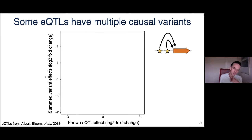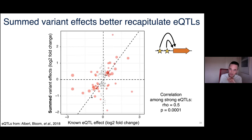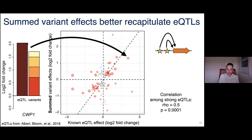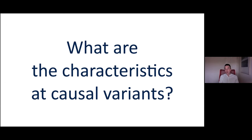Here's an extreme example: gene CWP1, where we have a strong eQTL in our earlier study. We now find four causal variants in the assay, each significant, all with effects in the same direction. You need all four to explain the overall eQTL effect. Even in simple yeast promoters there's a fair amount of complexity.